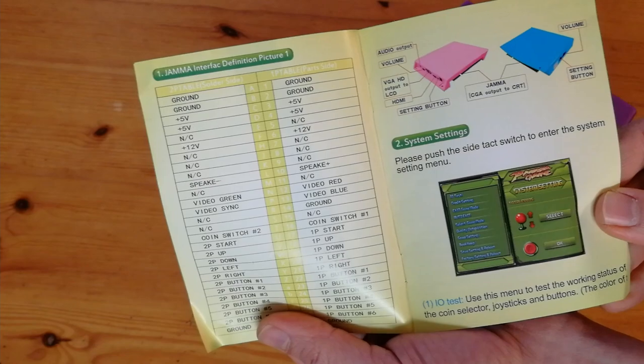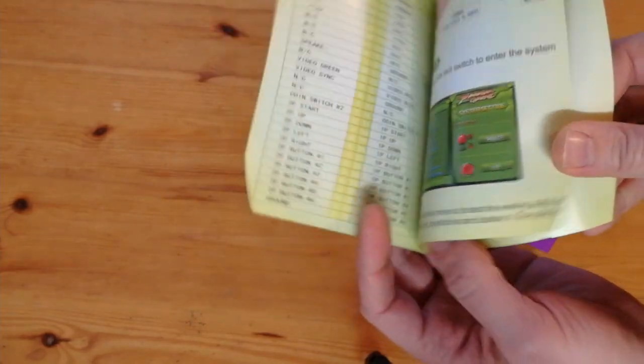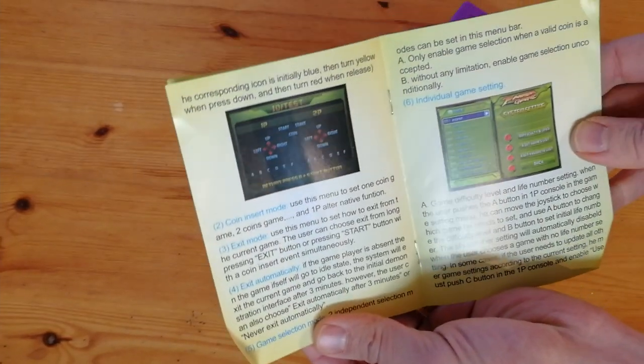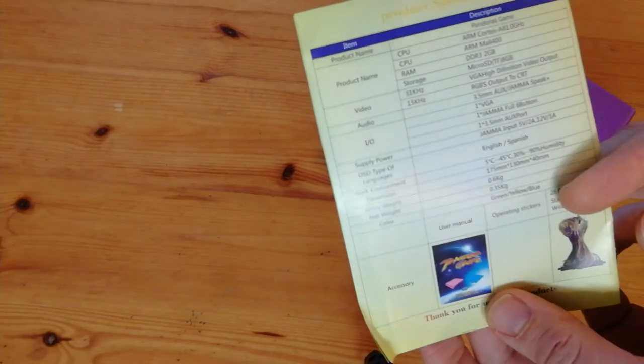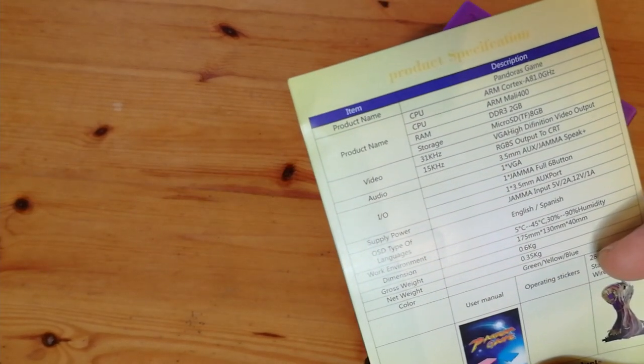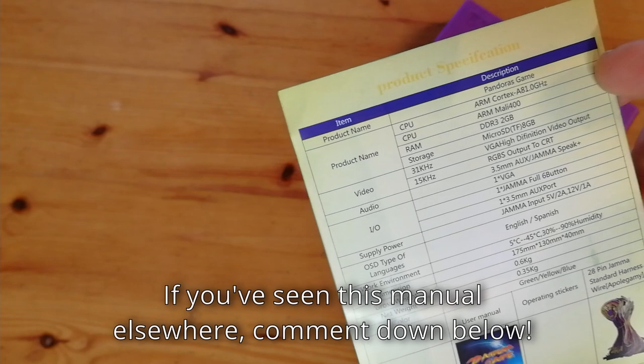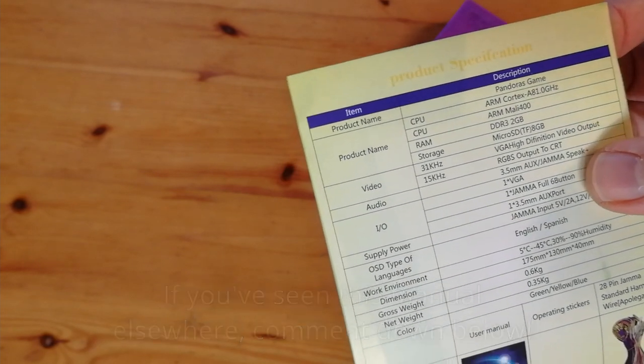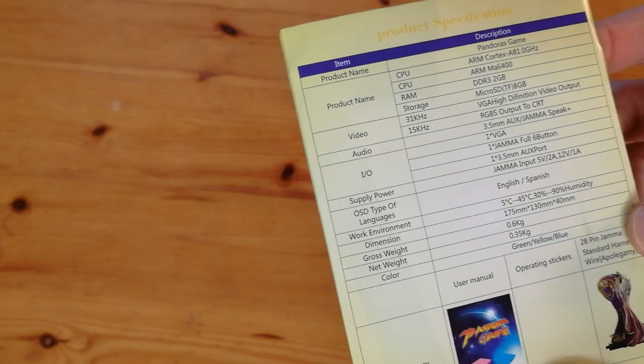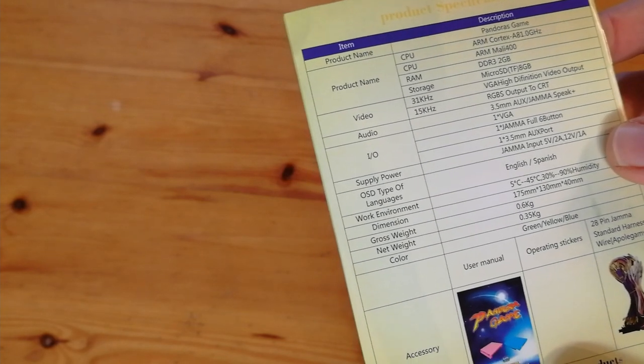Let's have a quick peruse of the manual. I think I've seen that green screen somewhere else. Is it the Pandora games 3? 4? Yeah, I don't know. Anyway, according to the back, it says this has ARM Cortex A8 1 GHz, ARM Mali 400, and for memory it's 2 gigabits, which is 256 megabytes.